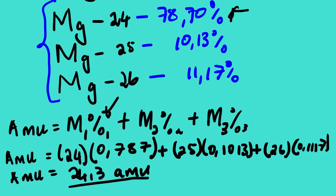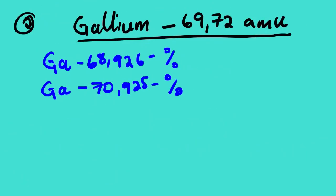Let us look at the second example, which is a bit different from the first. In this one, we are actually given the average atomic mass of gallium, which is 69.72, and we are given the masses of the isotopes. We are looking for the percentage abundance of each isotope.